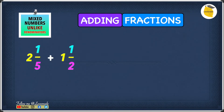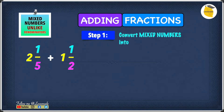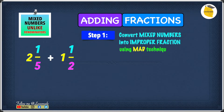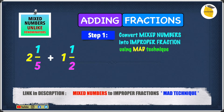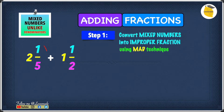The example we have is 2 1/5 plus 1 1/2. Step one is to convert mixed numbers into improper fractions using the MAD technique. If you want to know more about converting mixed numbers into improper fractions using the MAD technique, I've got a video on that — the link is in the description below, so go check that out. Now let's start with 2 1/5.